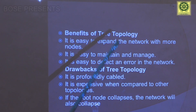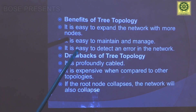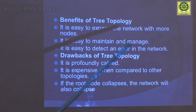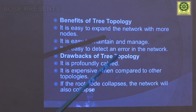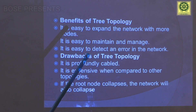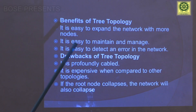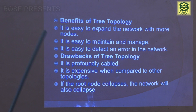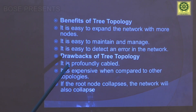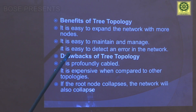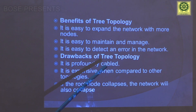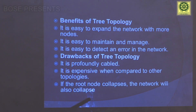The benefits of tree topology: it is easy to expand with one or more nodes and easy to maintain or manage. If one configuration of tree is damaged, error detection in the network can be done easily. The drawbacks: it requires more cabling and is expensive compared to other topologies. If the root node collapses, the network will also collapse.